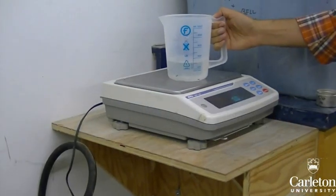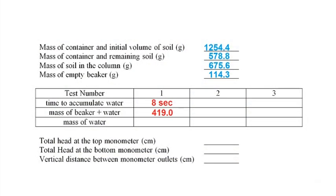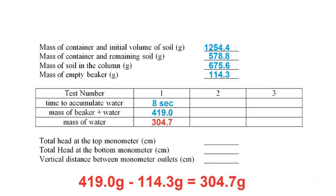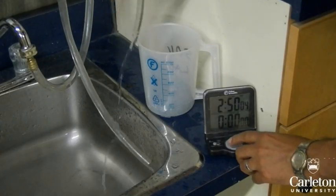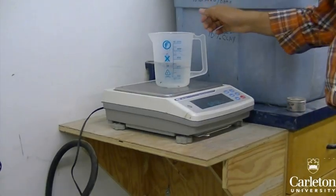Now record the mass of the water plus the beaker as well as the time it took to fill in seconds. Empty the water and zero the stopwatch to reset. Repeat this test two more times, each time aiming for a different amount of water.